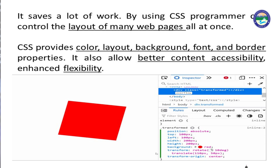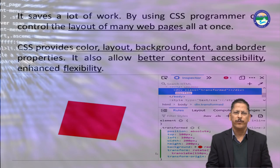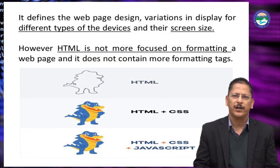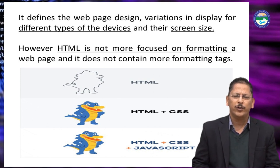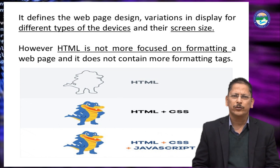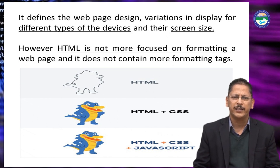CSS is very useful for web designing and web development. It defines web page design variations in display for different types of devices and their screens. We have different smart devices like tablets, laptops, mobile phones, or the smart screen of an automobile. A program written for a mobile phone will be displayed on a computer as well as a car's smart screen — everywhere it will be displayed. CSS accommodates itself as per different types of devices and their screen sizes.